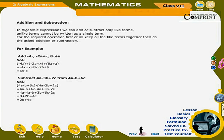Subtract 4a − 3b + 2c from 4a − b + 6c. Solution: (4a − b + 6c) − (4a − 3b + 2c) = 4a − b + 6c − 4a + 3b − 2c = (4a − 4a) + (−b + 3b) + (6c − 2c) = 0 + 2b + 4c = 2b + 4c.